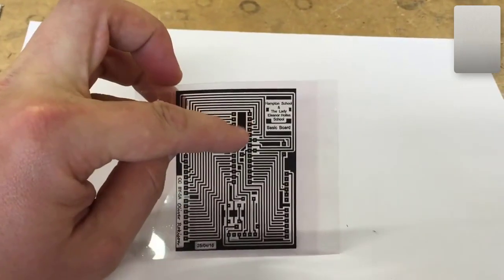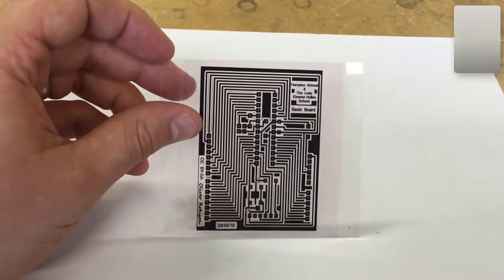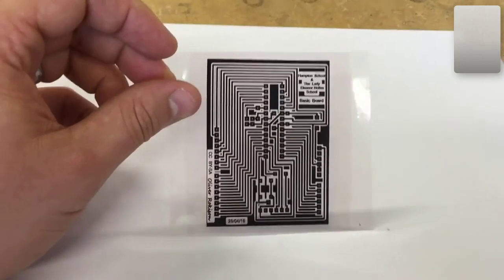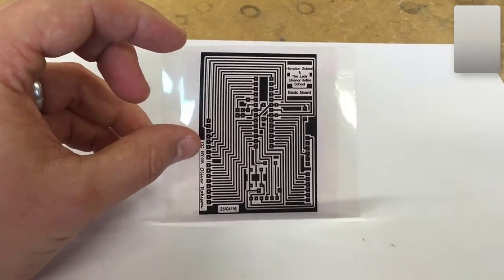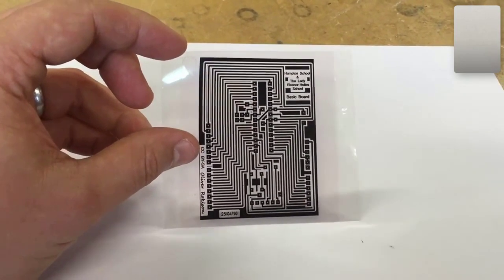This is to make sure that the black regions are especially black so that when I shine light through this PCB mask, light will only pass through the areas where there is no ink.